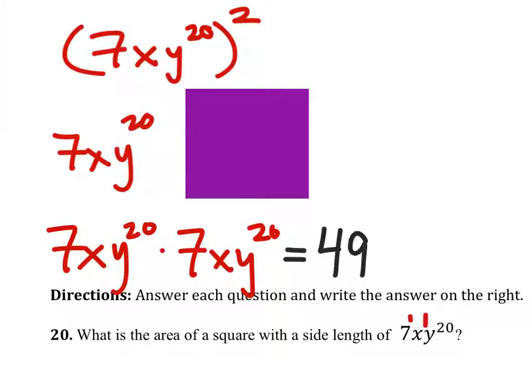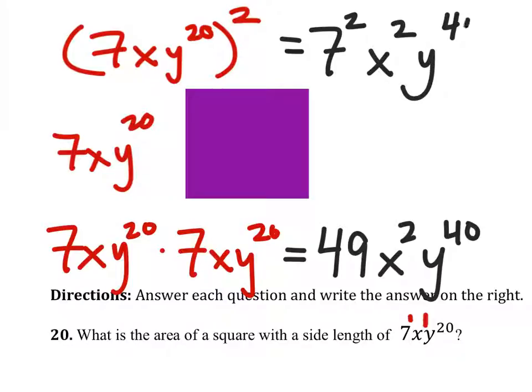7 times 7 is 49. We have 2 x's, and we have 40 y's. This one works the same, except maybe you just want to write 7 squared, x squared, and y to the 40th by multiplying the 2 to each of these 3 exponents.